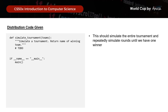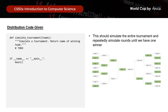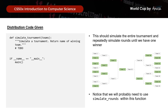Moving on to the simulate_tournament function, this should simulate the entire tournament and repeatedly simulate rounds until we have 1 winner. It is likely that we will need to use our simulate_round function here. Now that we have a rough idea of what we are given and what we need to do, let's dive into it.